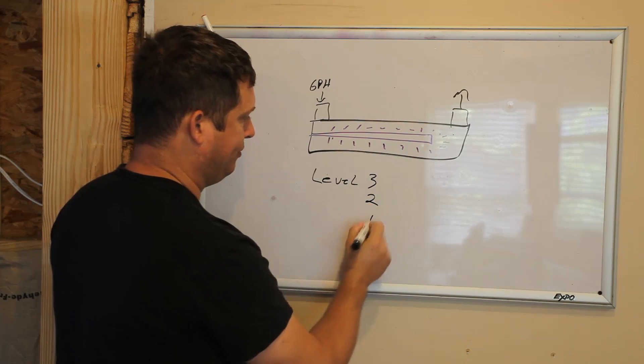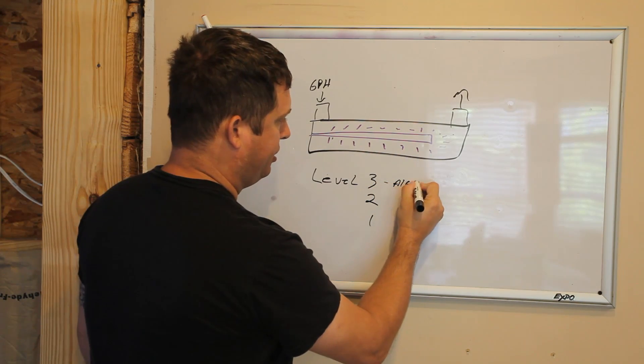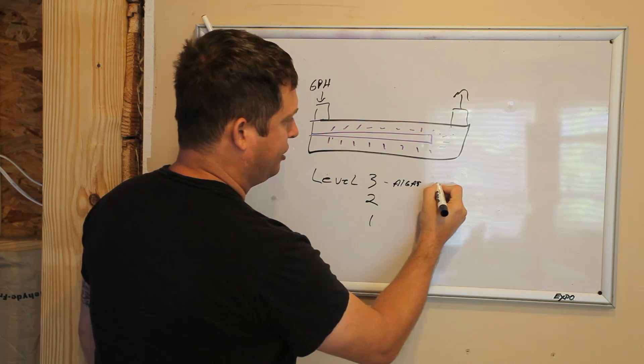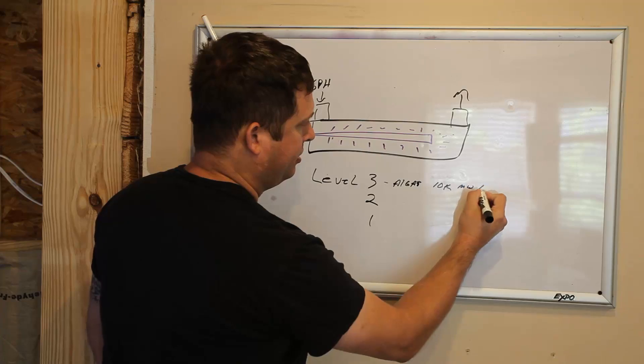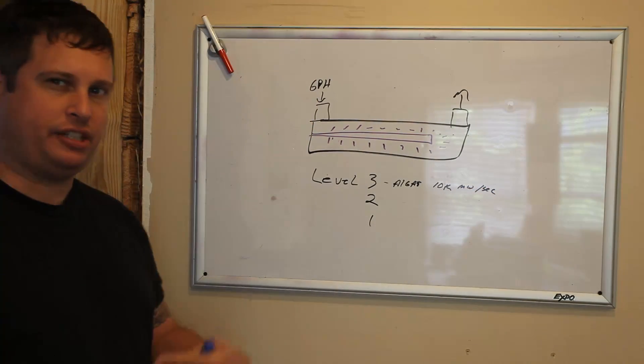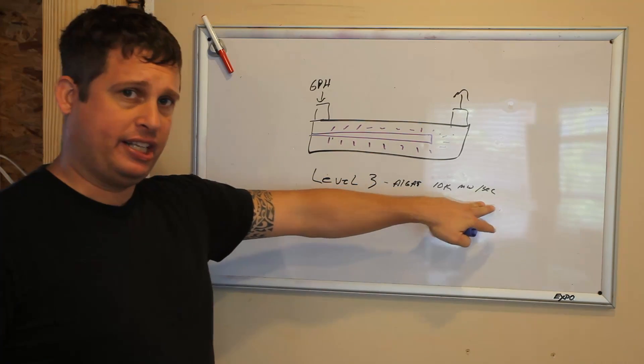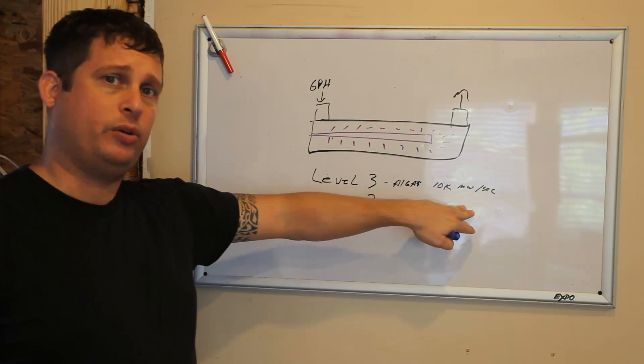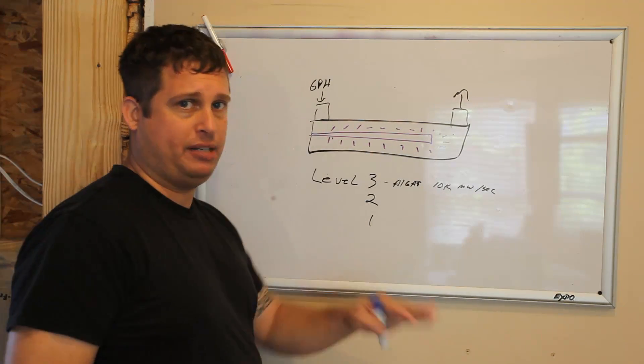This is typically classified into three categories. Level 3 will knock down algae and it's generally regarded as 10,000 milliwatt seconds. It's a cumulative effect, so 5,000 milliwatts for two seconds is the same as 10,000 milliwatts for one second.